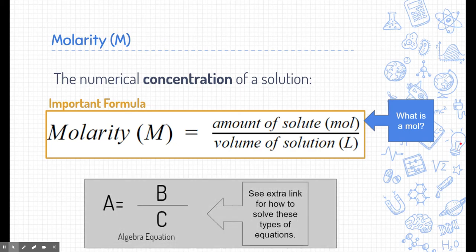Finally, this is an algebraic equation, A equals B over C. If you have any struggles with how to solve any of these different variables in this equation, I recommend checking out the extra link attached to this notes assignment that will help you solve for any of the different variables A, B, or C in this type of equation.